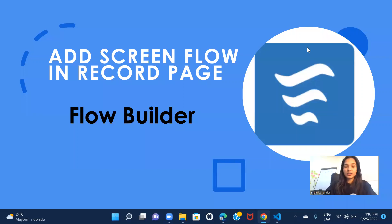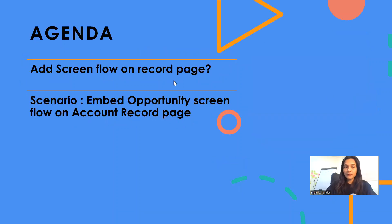Hi everyone, welcome back to another session of the Flow Builder series. Today we are going to see how to add a screen flow into the record page. Before we get started, let's have a look at the scenario we're going to cover. If you remember in our last session, we saw how to create a screen flow — the opportunity creation screen flow. What I'm going to do now is use that same screen flow and add it to my account record page.